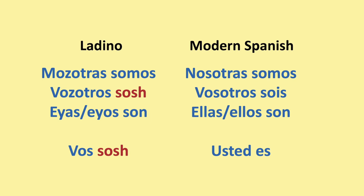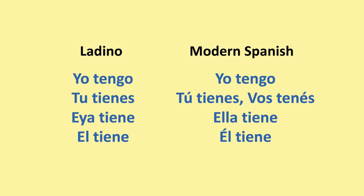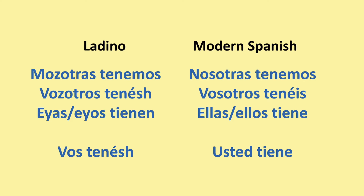In Ladino for 'tener': yo tengo, tu tienes, ella tiene, el tiene. In modern Spanish: yo tengo, tu tienes, vos tenes, ella tiene, el tiene. If you want to find out more about vos, you can check my channel for a video about it. We have: mozotras tenemos. You plural have: vosotros tenes. They have: ellas tienen / ellos tienen. And the formal: vos tenes.